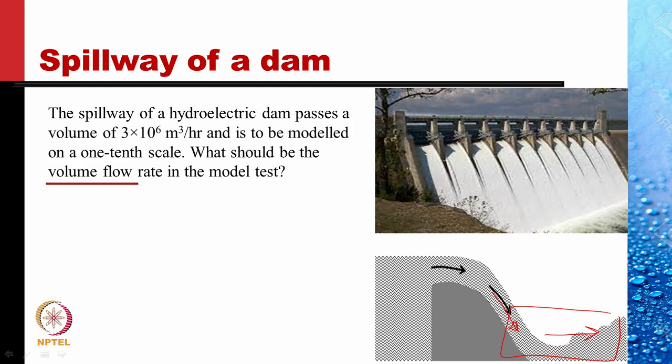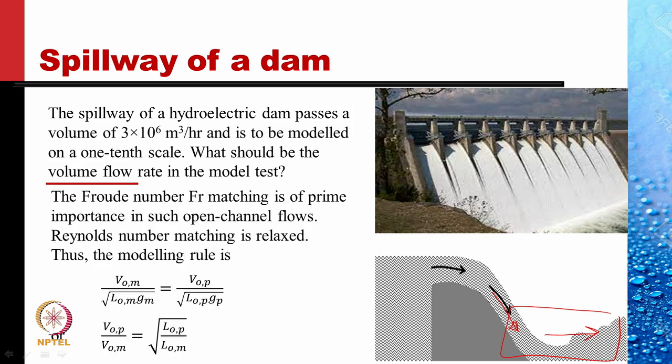The spillway of a hydroelectric dam passes a volume of 3 × 10⁶ m³ per hour and is to be modeled on a 1/10th scale. What should be the volume flow rate in the model test? Since this is a problem with a free surface and cavitation is not important, Froude number matching is of prime importance for such open channel flows. Reynolds number matching can be relaxed because the dependence on Reynolds number is low. Thus, the modeling rule is simply the matching of Froude number.